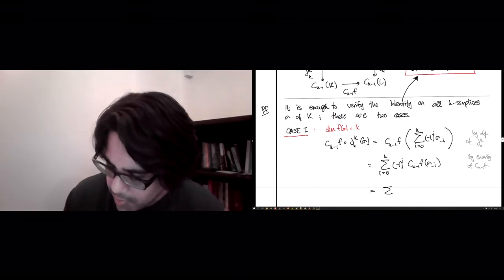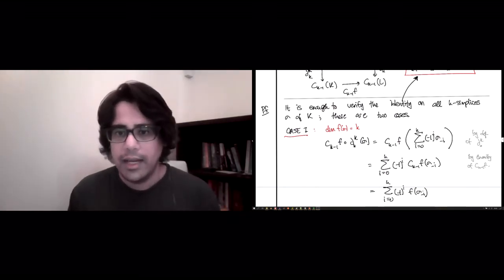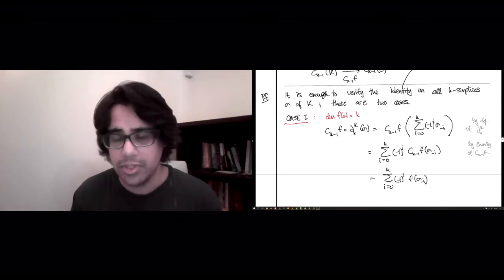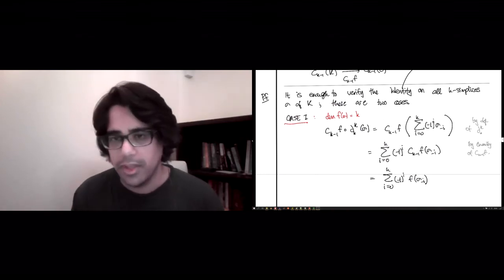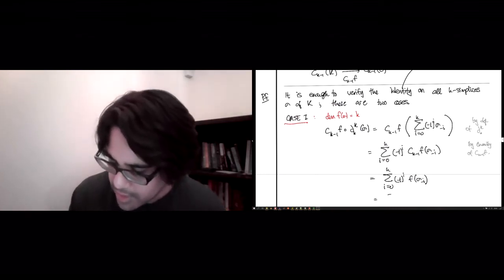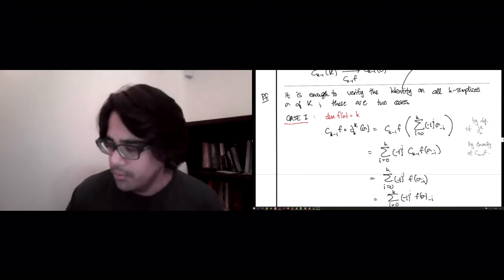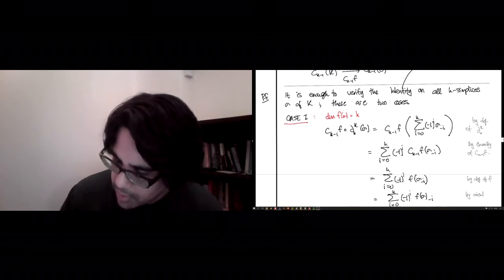Right, so this is going to be the sum i equals 0 to k, (-1)^i of f(σ_i). Good. And now, assuming you've oriented L in a way that is compatible with the orientation on K, which is to say that f respects the orientation. If one vertex is smaller than the other, then the f image of it will be smaller than the other. This is just the same as taking f(σ) and then removing the i-th vertex.